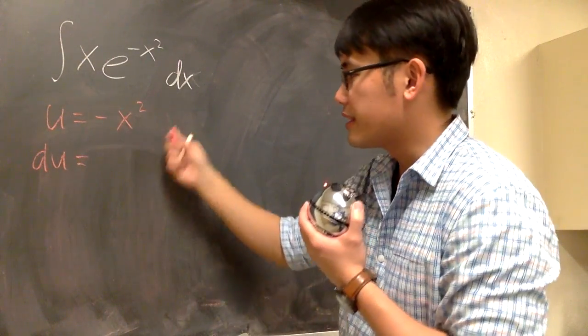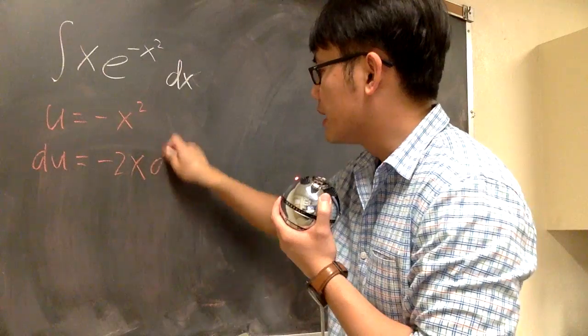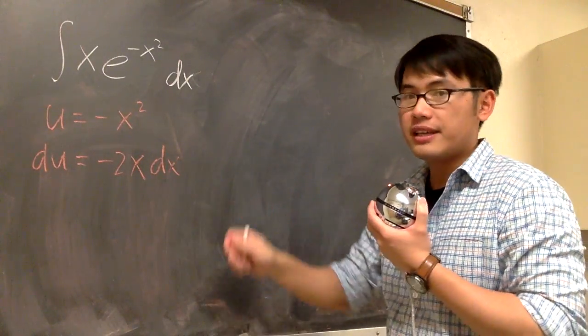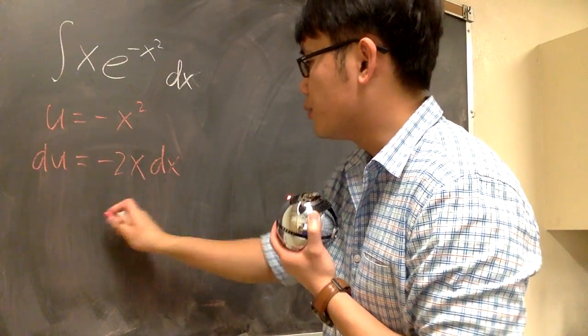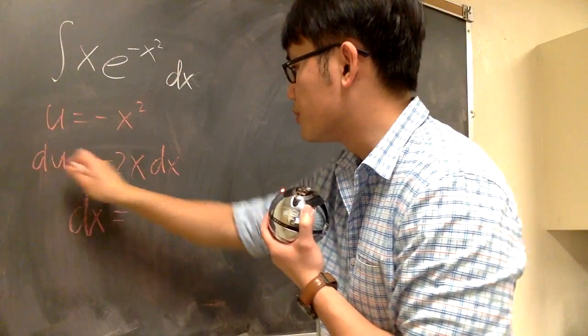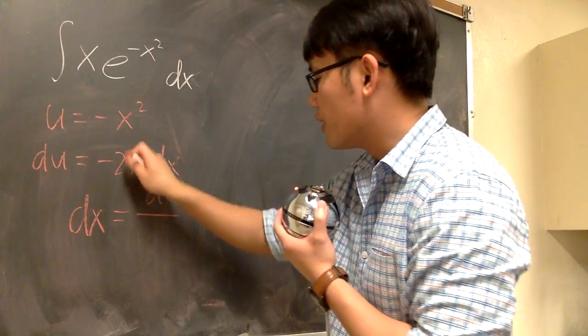We get du, and then take the derivative of this, we get negative 2x dx. Now to isolate the dx, let me divide both sides by negative 2x. We have dx equals du over negative 2x.